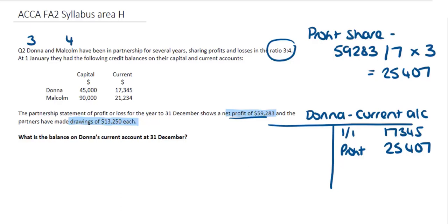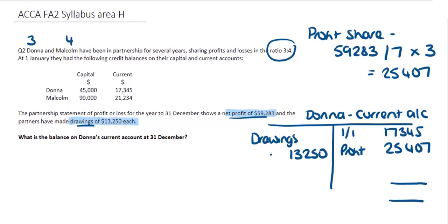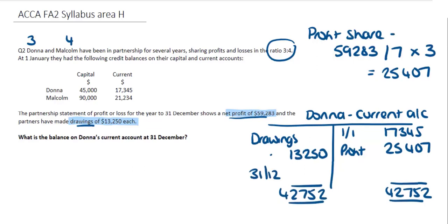Looking at what's left in the question relevant to the current account, we have the drawings. The partners made drawings of $13,250 each, so we allocate $13,250 to Donna's current account on the debit side. Balancing off the account, the credit side totals $42,752, so the closing balance at 31st December is $29,502. The balance on Donna's current account at 31st December is $29,502.